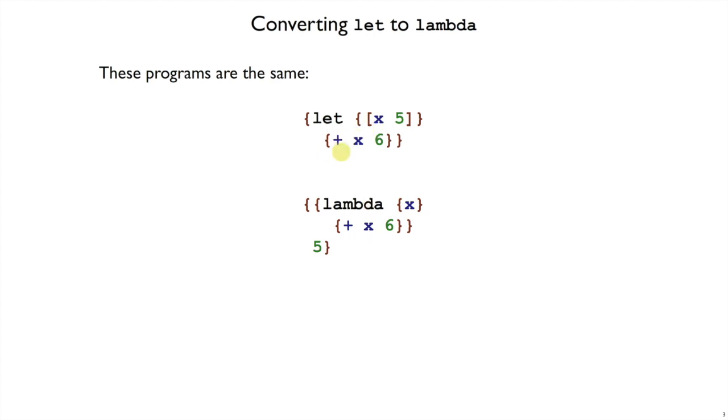There's nothing special about the plus x 6. It could be any body expression, and these two would still be the same. There's nothing special about the 5 or the name x. Really, any let of a name to a right-hand side in a body is the same as having a function that takes that name, used in a body, and applying that function to the right-hand side.